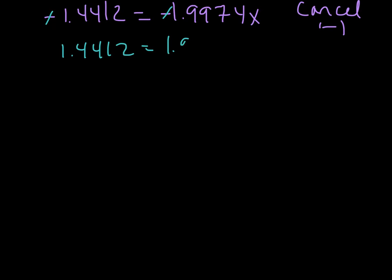So we ended up with negative 1.4412, and that's going to be equal to negative 1.9974x. We can cancel the negatives. So let's go ahead and do that, cancel those guys out, and we're going to end up with 1.4412 is equal to 1.9974x.